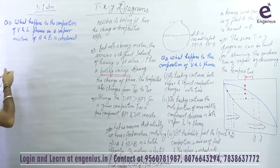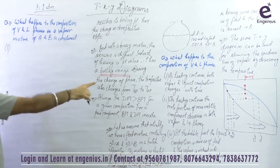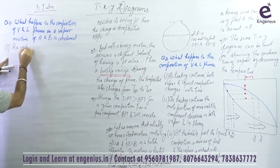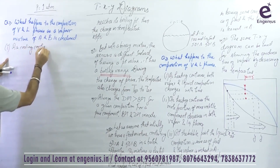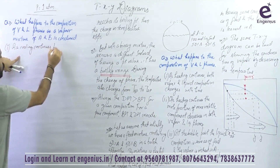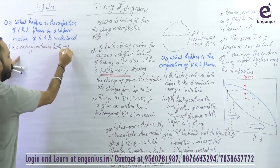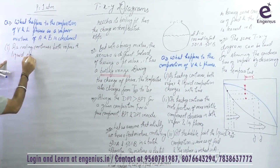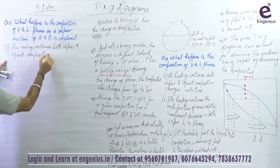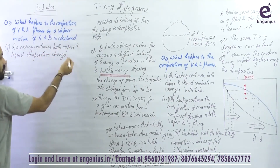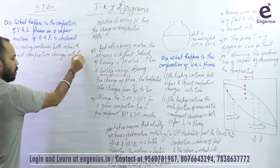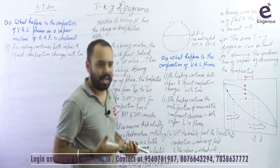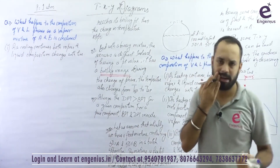First point: as condensation continues, or as cooling continues, I am decreasing the temperature. As cooling continues, both vapor and liquid composition changes with time — that's true, it is also an unsteady state process. Even the amount changes: as more and more condensation takes place, the liquid amount is increasing and the vapor amount is decreasing.